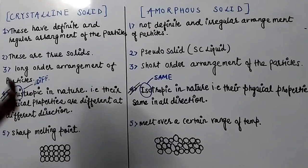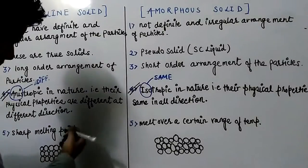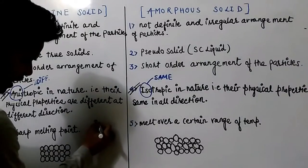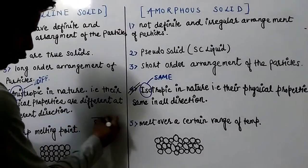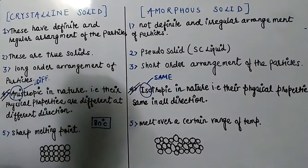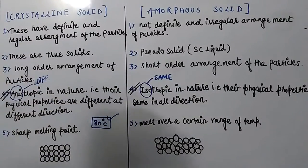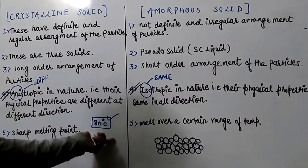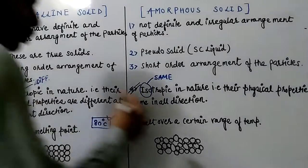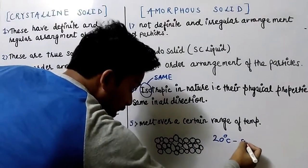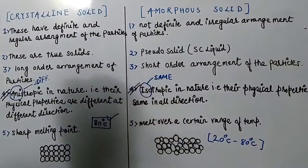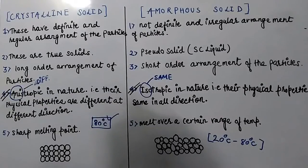Crystalline solids have a very sharp melting point. For example, if a crystalline solid melts at exactly 80 degrees Celsius, that is a sharp melting point — one fixed temperature. Amorphous solids, on the other hand, melt over a range, say from 20 degrees Celsius across a range of temperatures. So sharp melting point is crystalline, and melting over a range is amorphous.